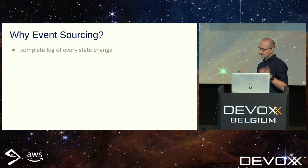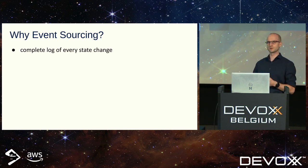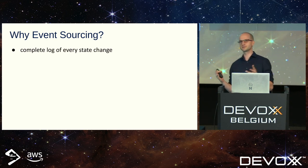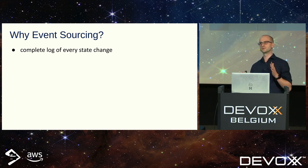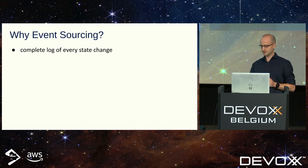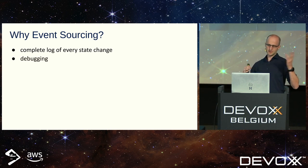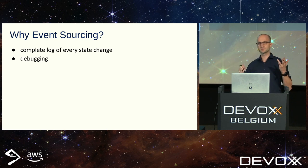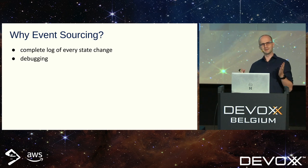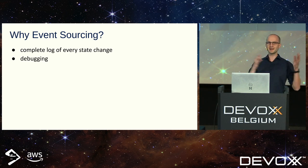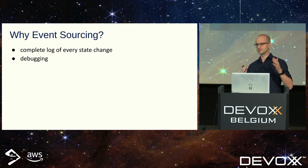So why event sourcing? With event sourcing you get a complete log of all state changes in the system. This is especially useful for your business — no data is lost — but for you as a developer it's pretty handy as well. Debugging: so many times when I was trying to find a bug in my system it was necessary to replay event by event, and trust me, debugging this way is a completely different story. It's like a time machine — you can move backward and forward. This is super handy.